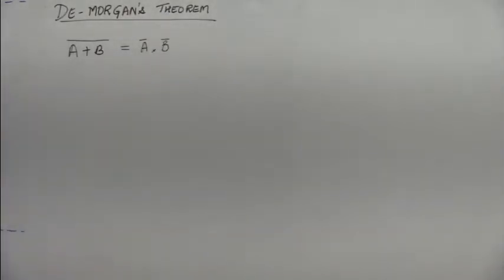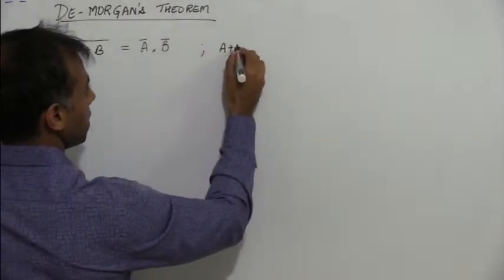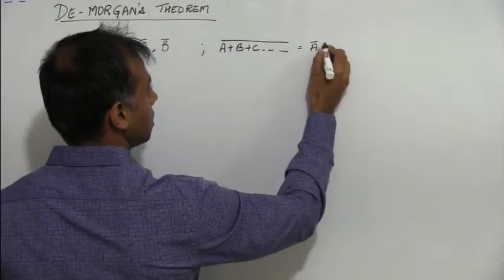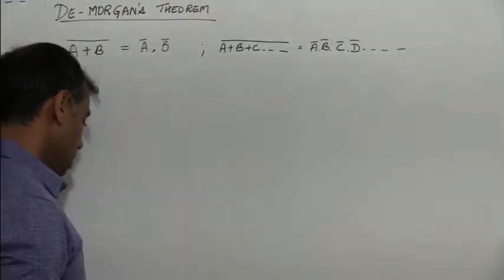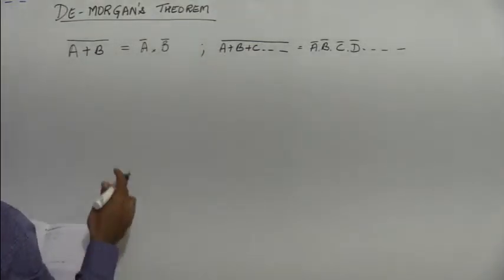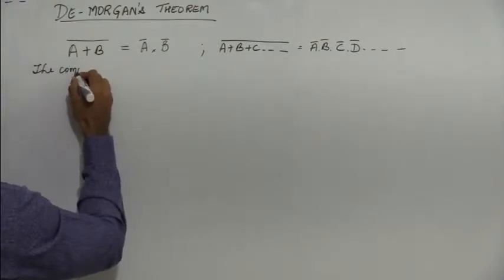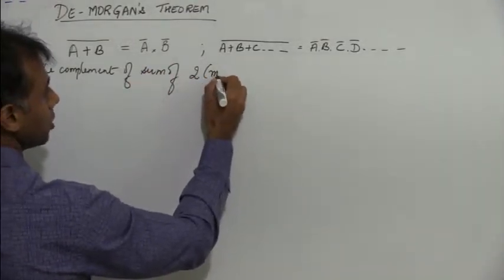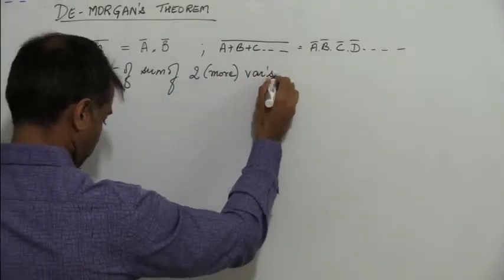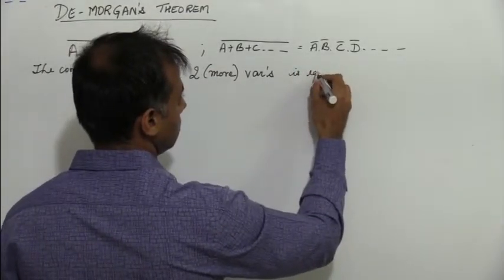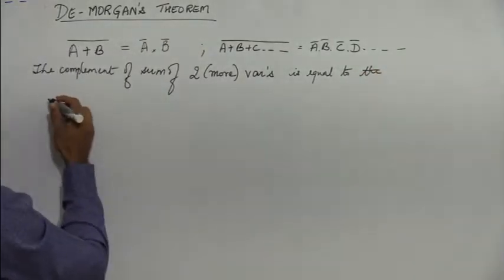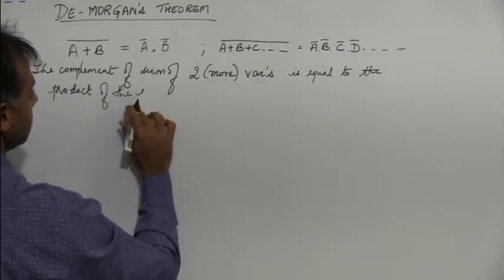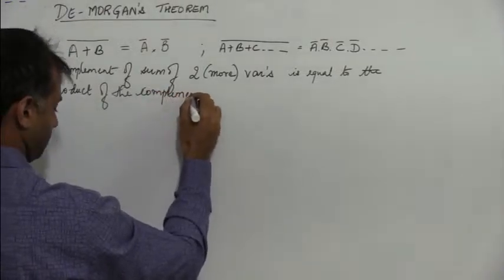This can be extended for three or more variables. So if I have A plus B plus C and so on, the whole complement is equal to A-bar dot B-bar dot C-bar dot D-bar and so on. So the first statement is: the complement of the sum of two or more variables is equal to the product of the complements of the variables.